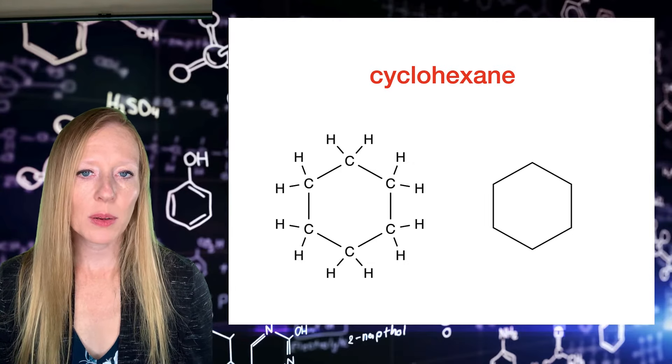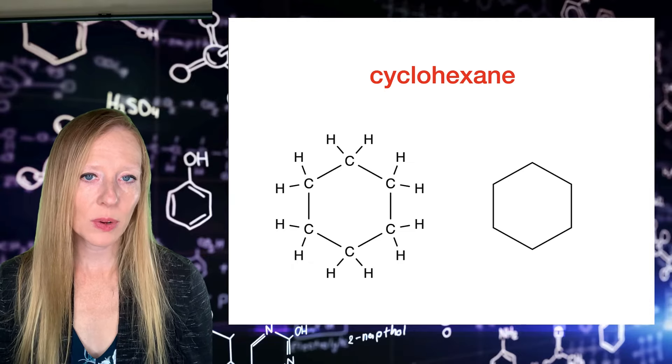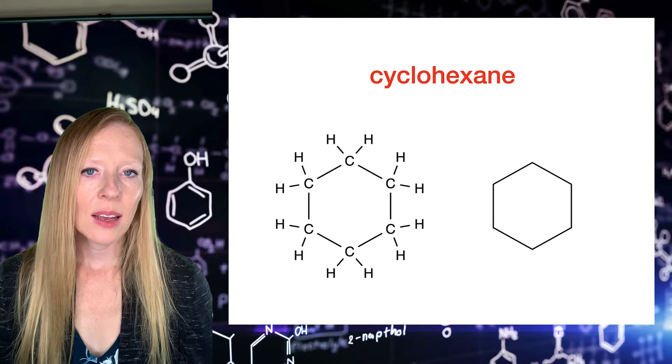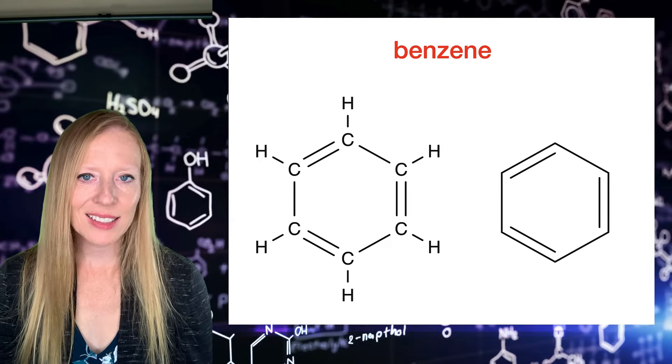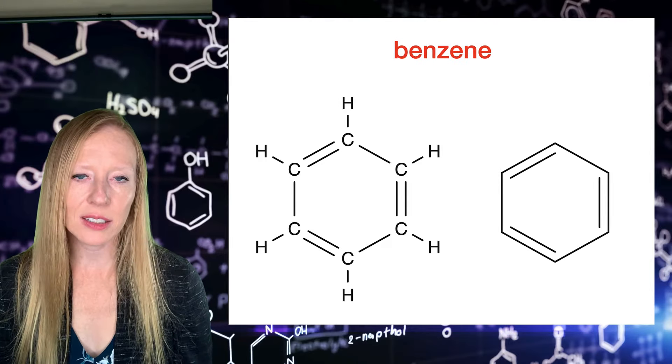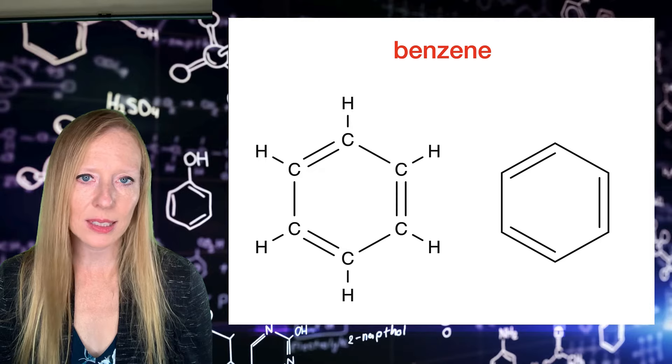These structures can be pretty simple, such as this one. This is cyclohexane. They can be a little bit fancier and have some double covalent bonds. This is benzene, which has alternating single and double bonds. We see this a lot.